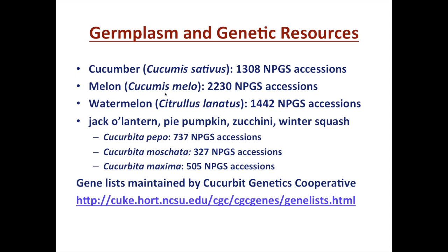Melon, cucumis melo, has over 2,000 accessions readily available, and this would include cantaloupe, honeydew, and muskmelon — some great sources of beta-carotene and some great flavors to be found there. Watermelon, citrullus lanatus, again has many accessions. Watermelon is known as a great source of lycopene in the diet, with great bioavailability.